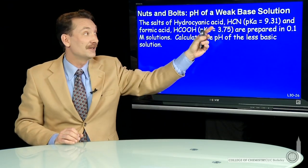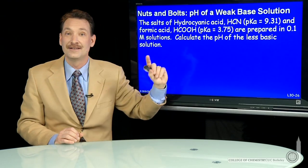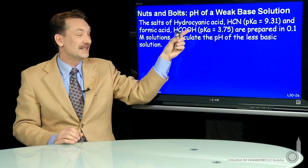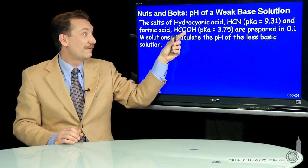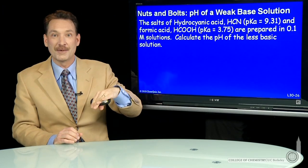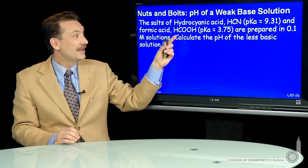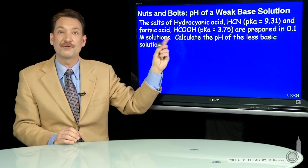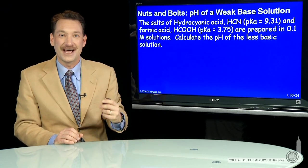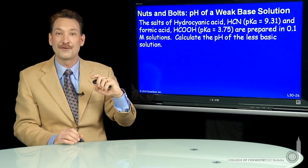So the salt of acids contains the weak base. If I did that with formate, I'd take formic acid and react it with sodium hydroxide. I'd form sodium formate. And sodium formate contains the formate ion. That's the conjugate base of formic acid.